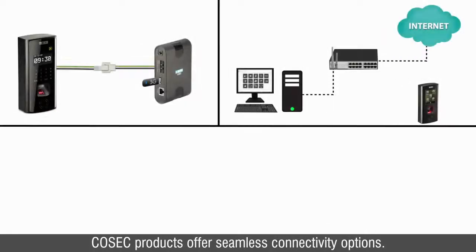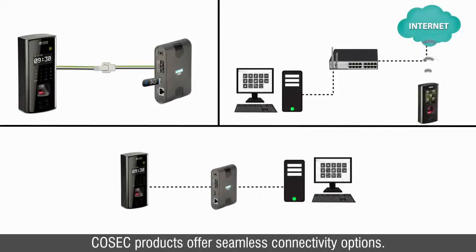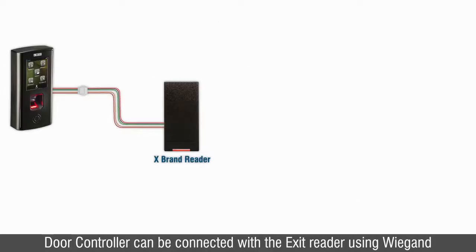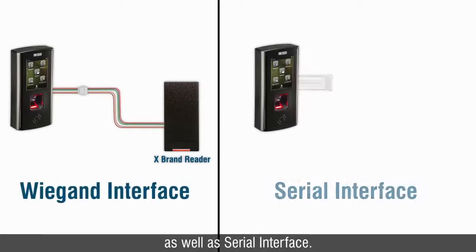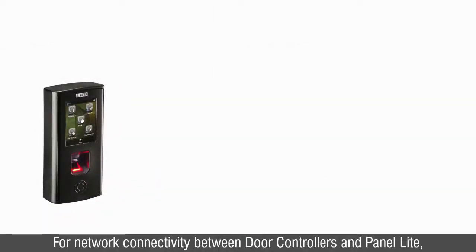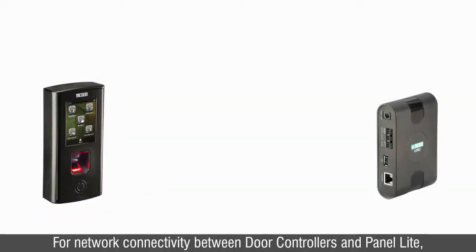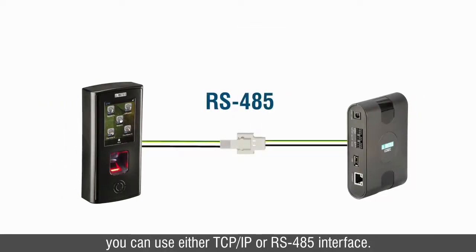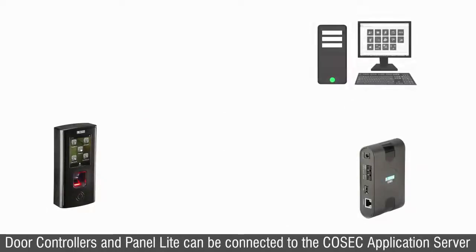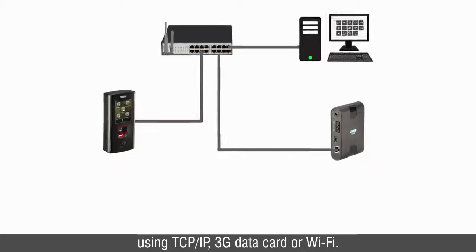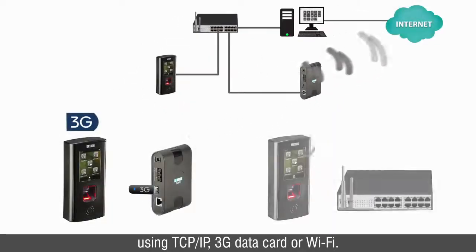Cosec products offer seamless connectivity options. Door controllers can be connected with the exit reader using VGAIN as well as serial interface. For network connectivity between door controllers and panel light, you can use either TCP/IP or RS-485 interface. Door controllers and panel light can be connected to the Cosec application server using TCP/IP, 3G data card or Wi-Fi.